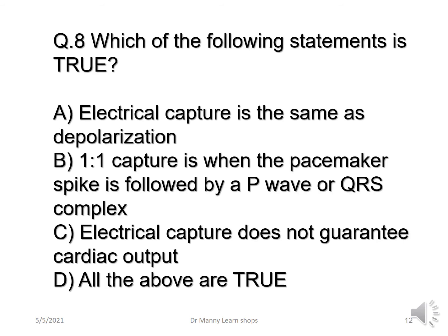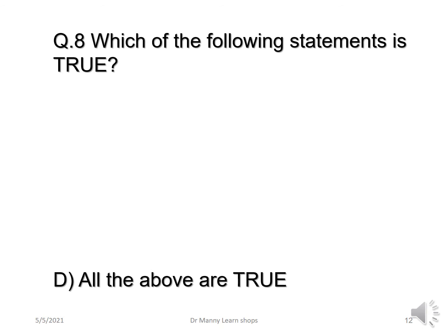Question eight: which of the following statements is true? A, electrical capture is the same as depolarization; B, one-to-one capture is when the pacemaker spike is followed by a P-wave or QRS complex or both; C, electrical capture does not guarantee cardiac output; or D, all the above are true. The answer is D — all the above are true.